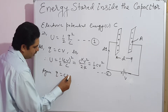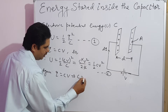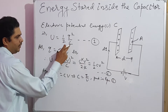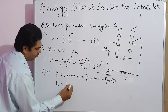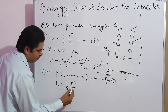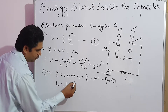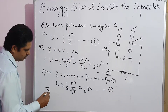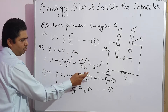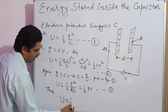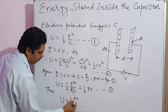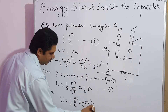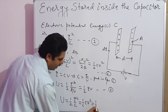Again, Q equals CV, so from here C equals Q by V. Put this in equation 1: U equals half Q squared upon (Q by V). Cancel one Q, and you get U equals half QV. This is equation 3.